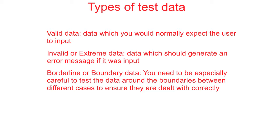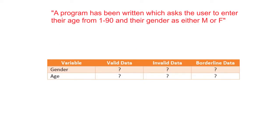Let's have a look at a simple example to put these types of test data into context. Imagine a program has been written which asks the user to enter their age from 1 to 90, and their gender as either the letter M or the letter F. Come up with three sets of test data which could test this program for valid, invalid and borderline data.